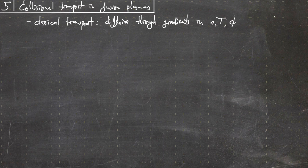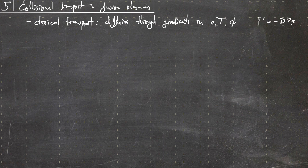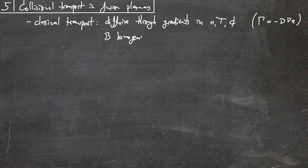This means we have a fixed law which says that the diffusion flux is proportional to a concentration gradient — Fick's law — where the flux is proportional to a diffusion coefficient times the gradient in some concentration, for example the density. For classical transport we assume B, the magnetic field, to be homogeneous and straight.